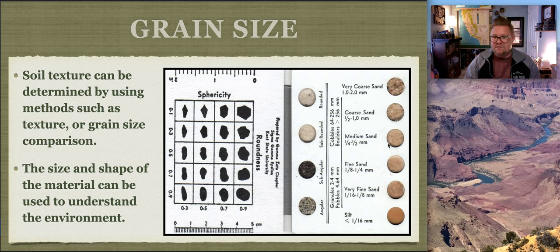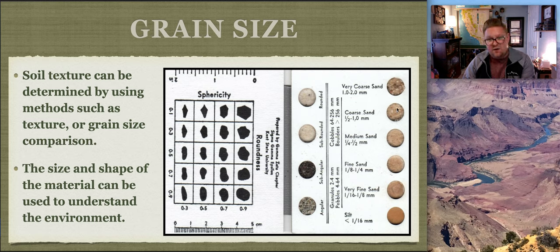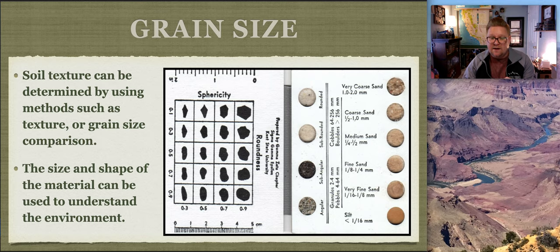A field grain size reference booklet shows different grains: very coarse, coarse, medium, fine sand, very fine sand, and silt - similar to sandpaper grits. Measurements are in microns, smaller than millimeters. Soil texture can be determined by grain size comparison. We can also use a microscope to look at shape - more angular means fresh or wind-blasted, more rounded or sub-rounded usually means water involvement, and more disc-like usually means a beach or coastal environment.